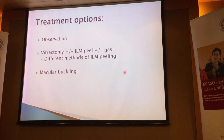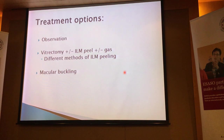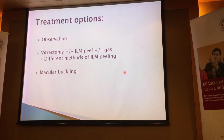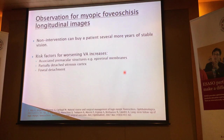What are the treatment options? Observation is obviously one very viable option. If we are going to be doing active management, then we are usually looking at vitrectomy. We are going to discuss various adjuvant treatments within the vitrectomy realm. Macular buckling — we will also speak a little bit about that.